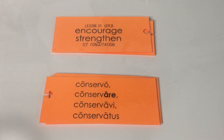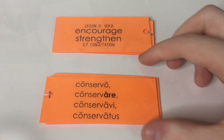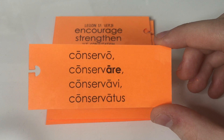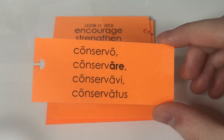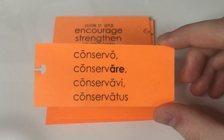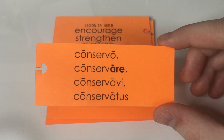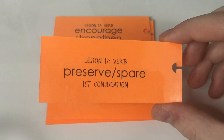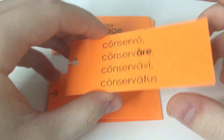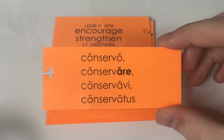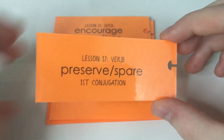And then we get to a few more new vocabulary words. This one — you have to be careful because it looks a lot like the word 'conserve' in English. The actual meaning rhymes with it, but it's not quite the same. It means preserve or spare. If you swap the 'con' for 'pre' in this word, then you get 'preserve.' So it means preserve or spare.